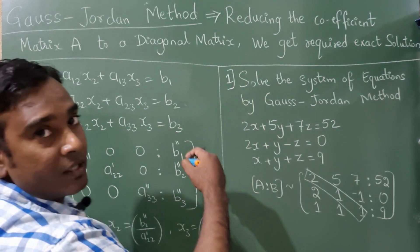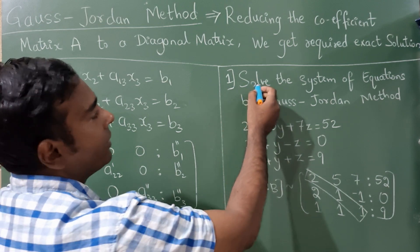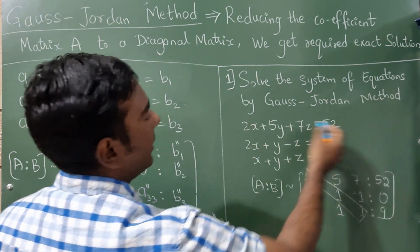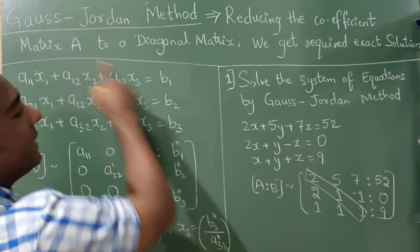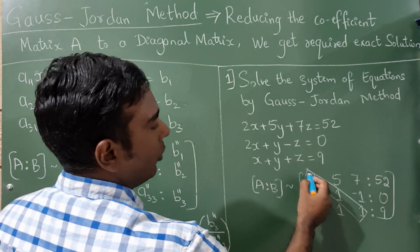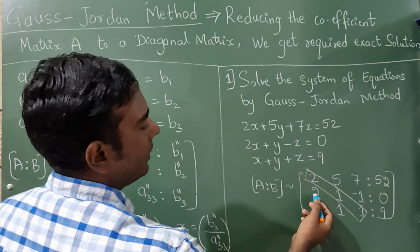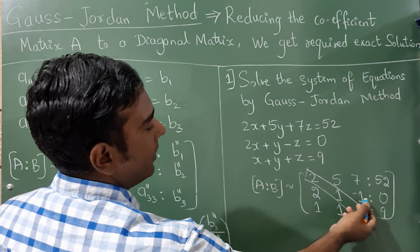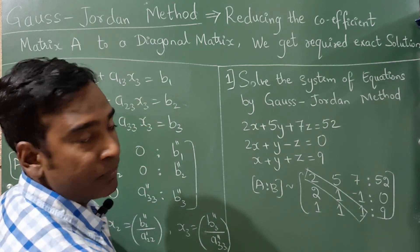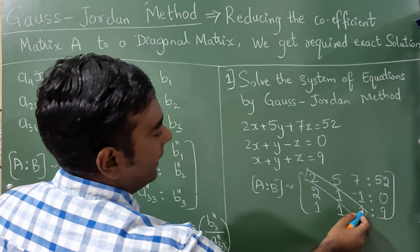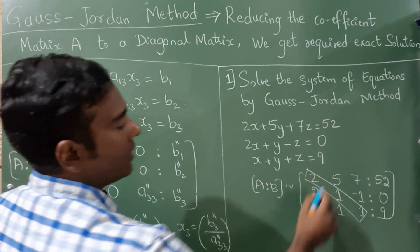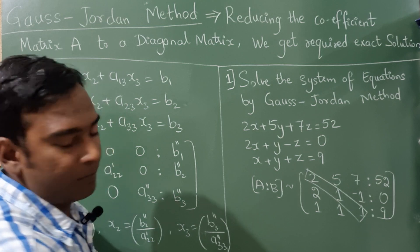So here is one question: solve the system of equations by the Gauss-Jordan method. I have written the coefficient matrix with elements 2, 5, 7, 2, 1, -1, 1, 1, and 1. Only diagonal elements should remain; rest all should be made 0.